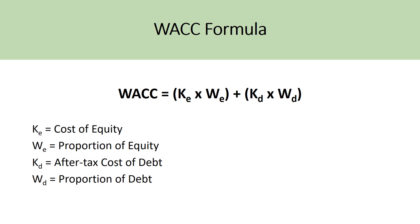To calculate the weighted average cost of capital, the WACC formula is calculated by multiplying the cost of equity by the proportion of equity to the total market value of capital, plus the after-tax cost of debt times the proportion of debt to the company's total market value of capital. There are two sources of capital — equity and debt — and you're looking at their respective costs and calculating the weighted average. This formula is relatively simple to understand.